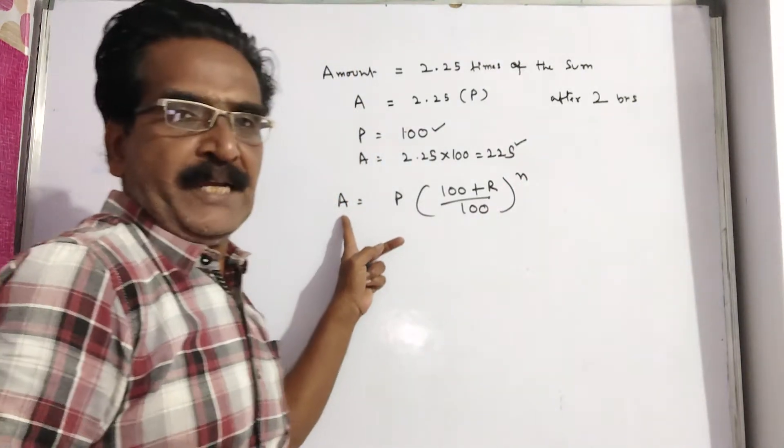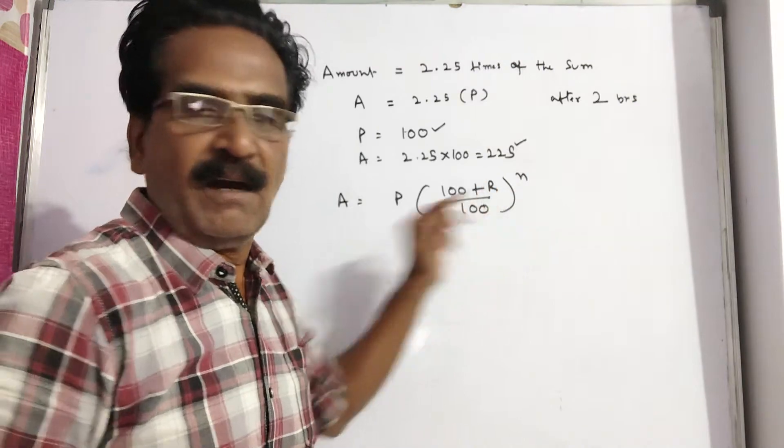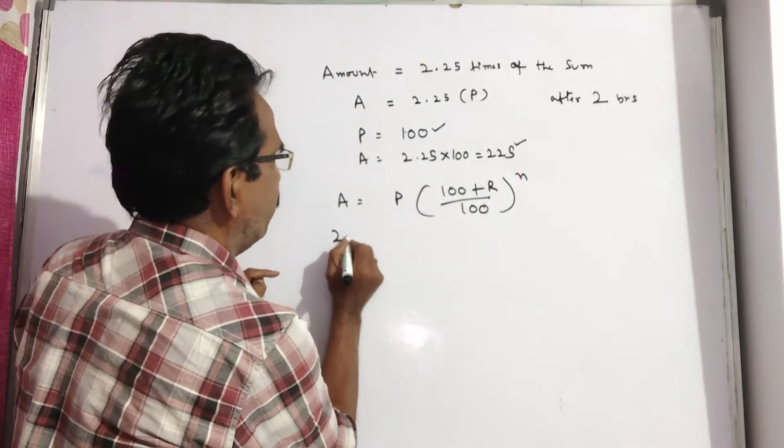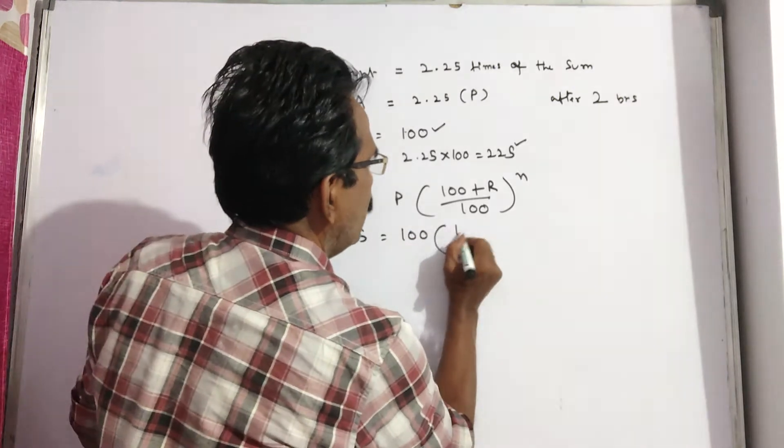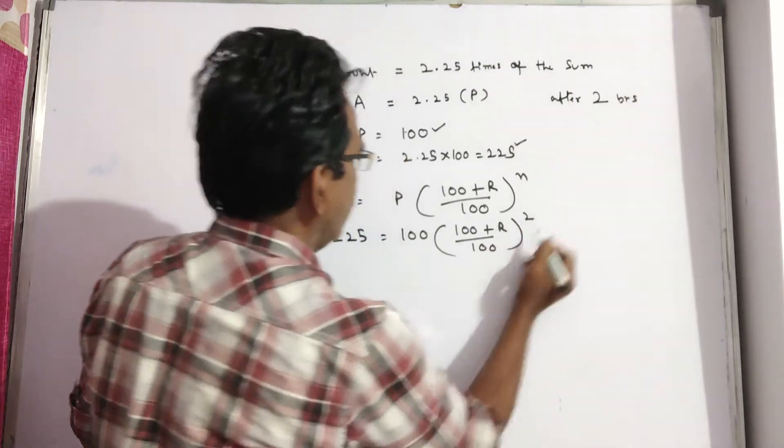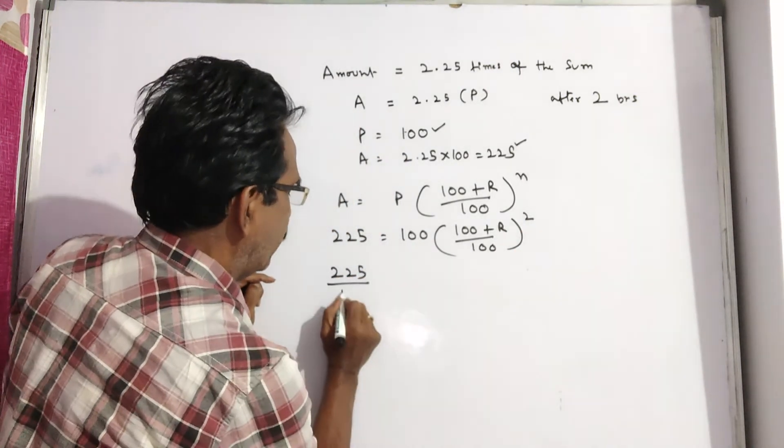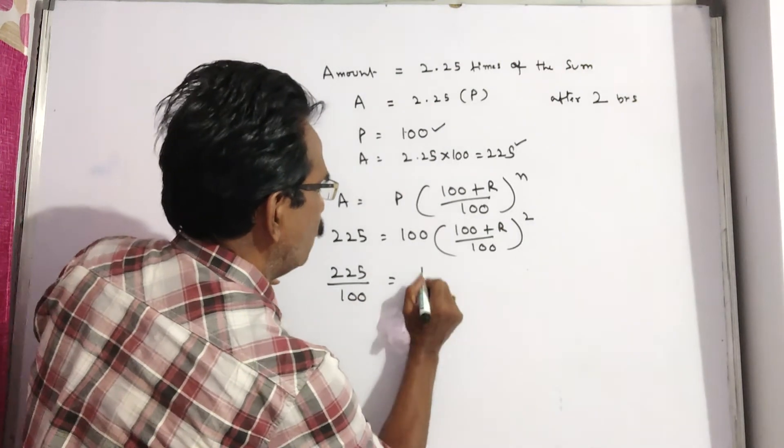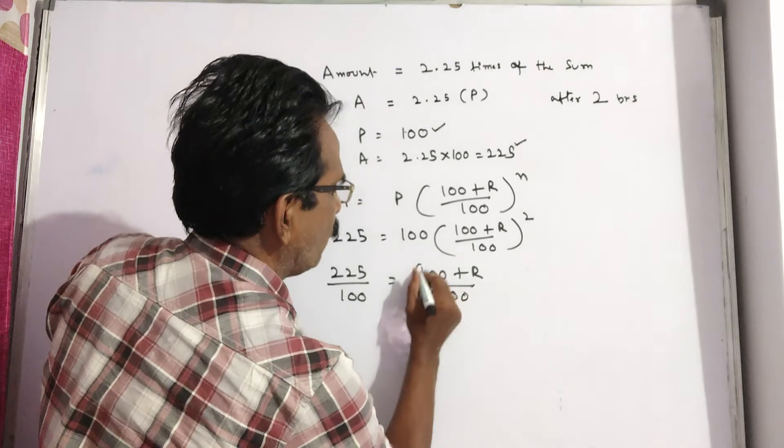Here we know A, we know P, we know n. We can find R. 225 is equal to 100 into (100 plus R by 100) whole square. It implies 225 by 100 is equal to (100 plus R by 100) whole square.